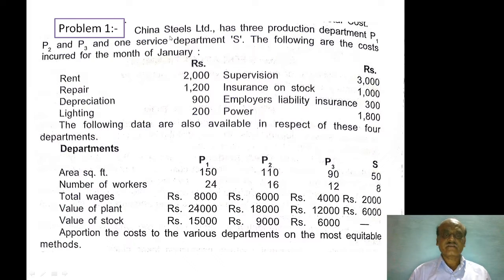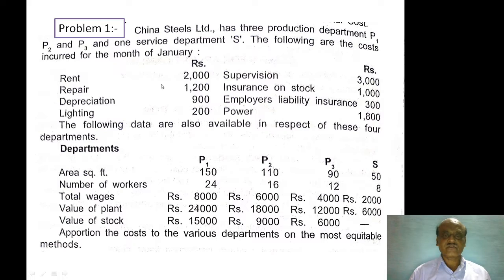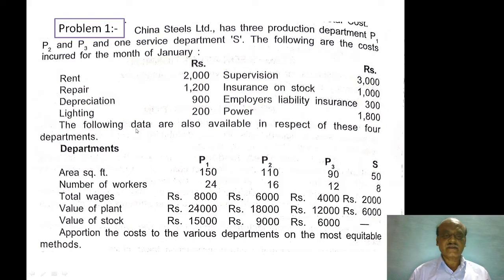The problem is like this: China Steels Limited has three production departments P1, P2, P3 and one service department S. The following are the costs incurred for the month of January: Rent rupees 2000, Repairs rupees 1200, Depreciation rupees 900, Lighting rupees 200, Supervision rupees 3000, Insurance on stock rupees 1000, Employer's liability insurance rupees 300, and Power rupees 1800. These are all the expenses.